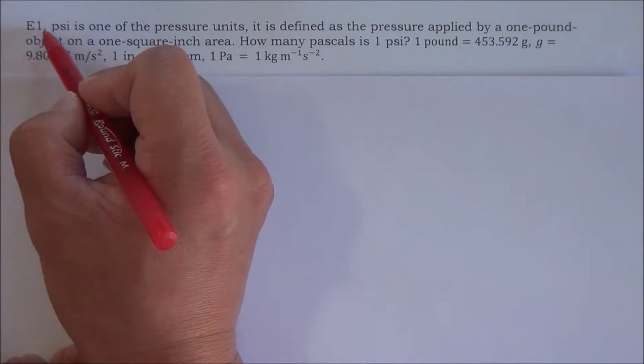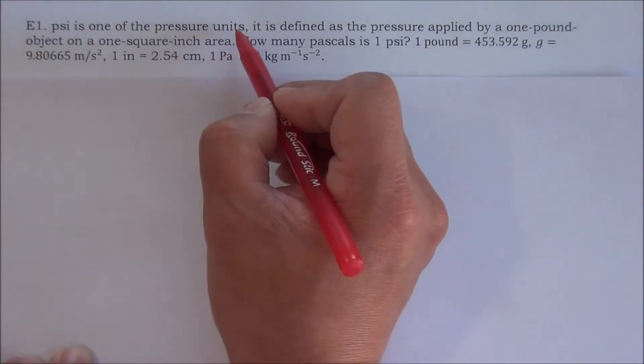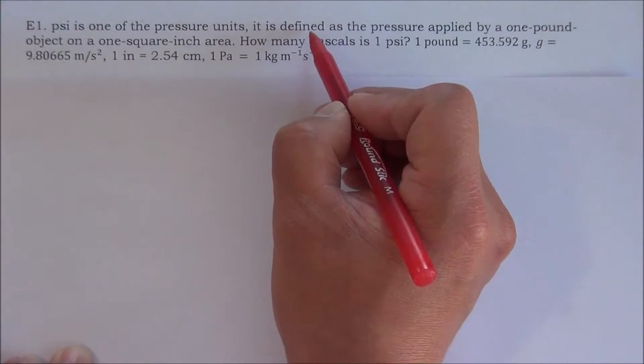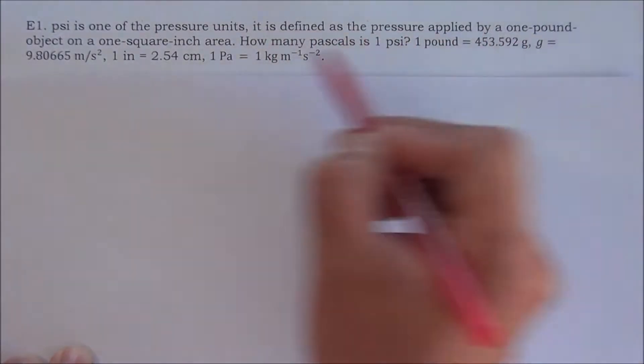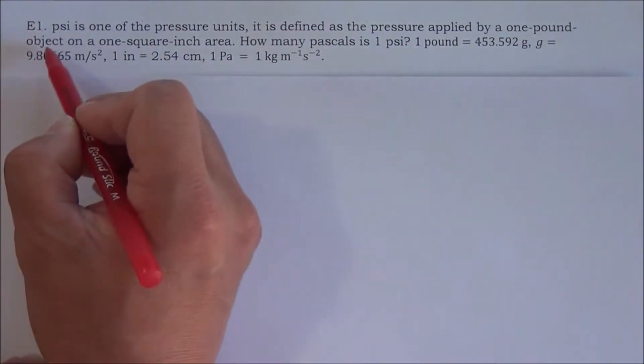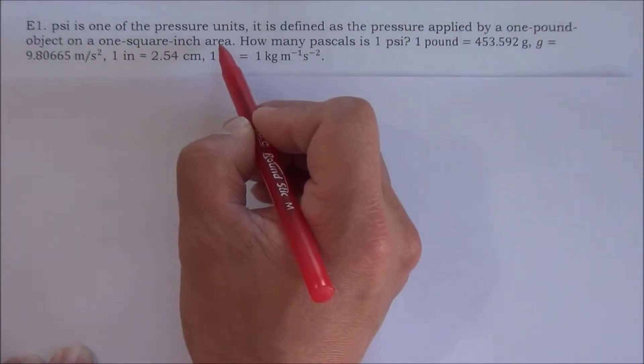Example 1. Psi is one of the pressure units. It is defined as the pressure applied by one pound object on a one square inch area.